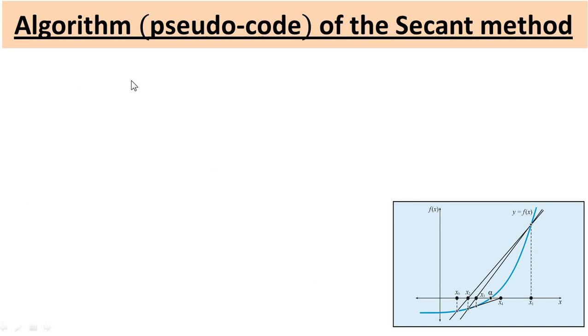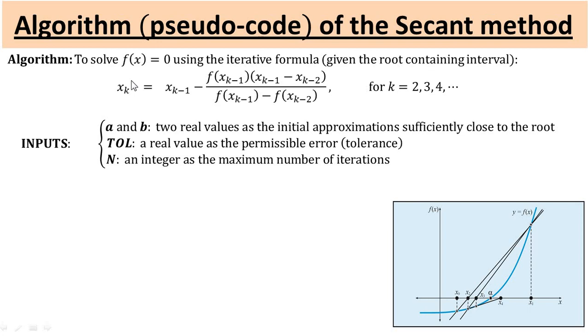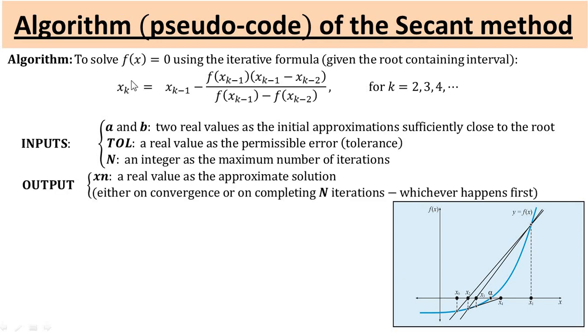First we will discuss the algorithm or pseudo code of the secant method to solve f(x) equal to zero. This is the iterative formula of the secant method. The inputs required by the algorithm are a and b, two real values as the initial approximations sufficiently close to the root, tolerance which is a real value as the permissible error, and an integer N as the maximum number of iterations. The output of the method is a real value as an approximate root of the problem equation. The output is obtained on convergence or on completing N iterations, whichever happens first.